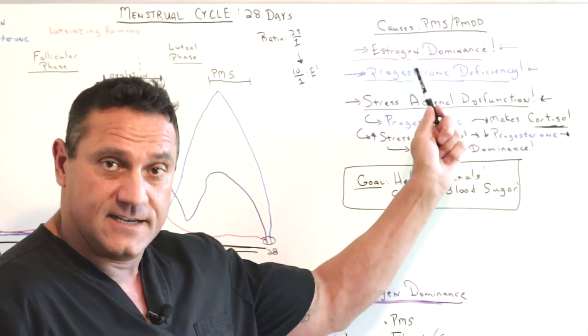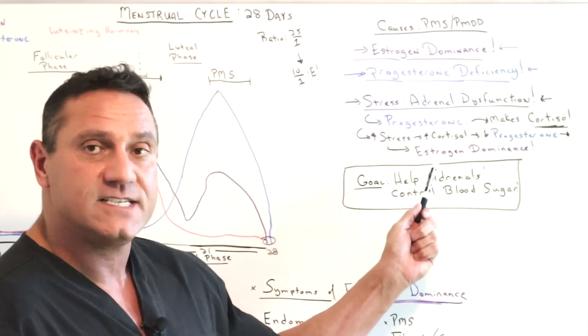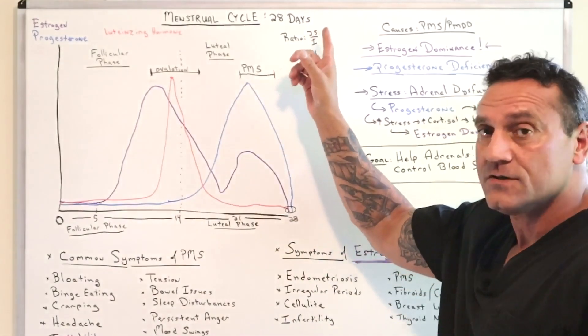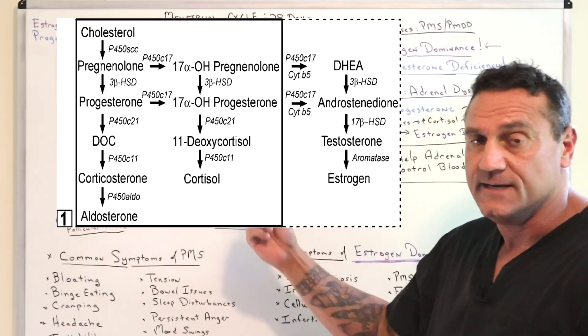Then you get a decrease in, you get a deficiency in progesterone, which in turn you get an increase in estrogen, estrogen dominant. The ratio goes from 25 to 1, maybe down to 10 to 1.